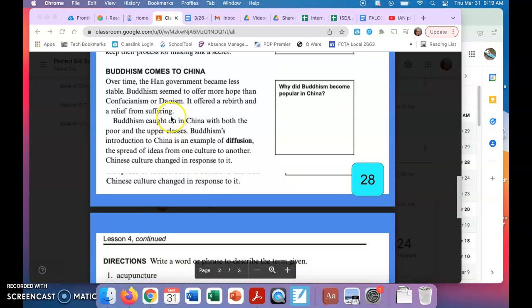Okay, our next section: Buddhism comes to China. The question that you're going to answer is why did Buddhism become popular in China? Over time the Han government became less stable.